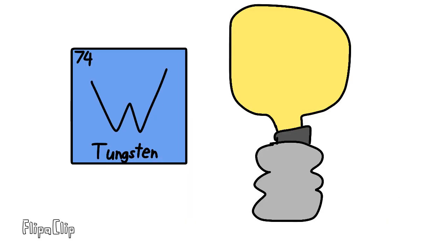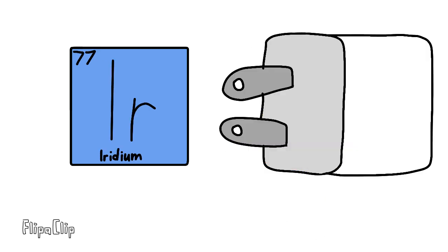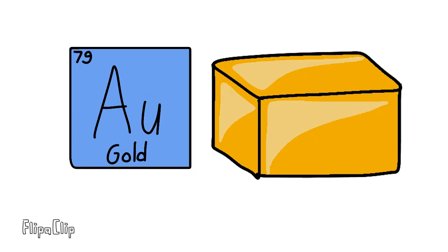Hafnium, tantalum, tungsten, and then on to rhenium, osmium, and iridium, platinum, gold to make you rich till you grow old.